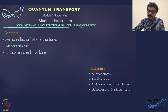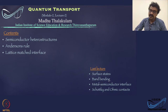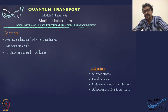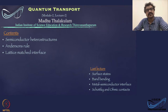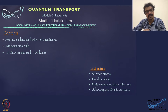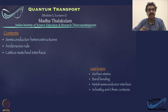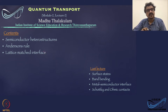In the last lecture, we discussed surface states, band bending, how the bands corresponding to the electronic states deviate as we move from the bulk to the surface, metal-semiconductor interfaces, and Schottky and ohmic contacts. In this lecture, we will spend most of our time discussing semiconductor heterostructure — the formation of the semiconductor heterostructure, the basic rules for aligning bands, and fabrication methods for lattice-matched interfaces between two semiconductors.